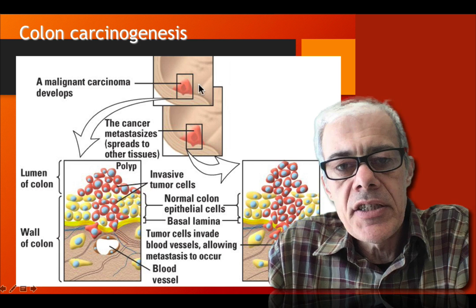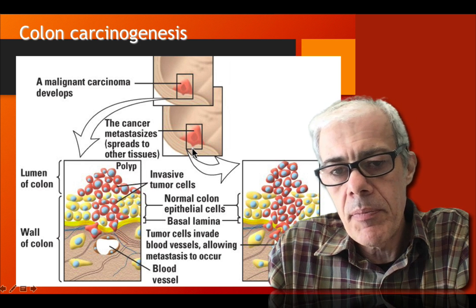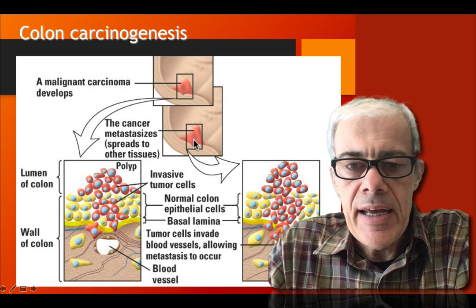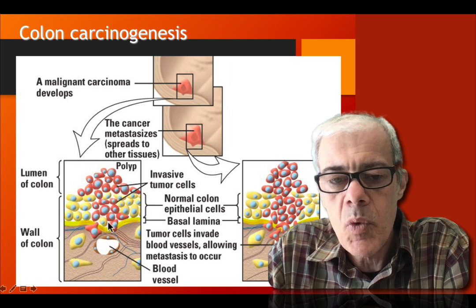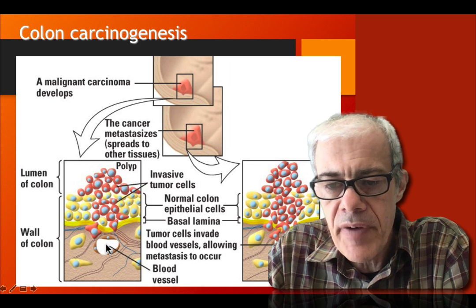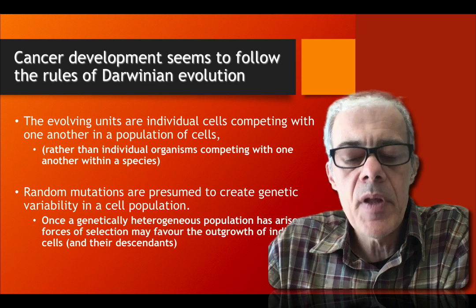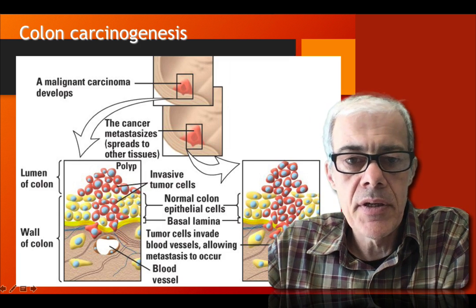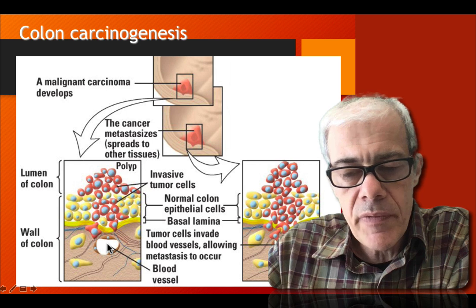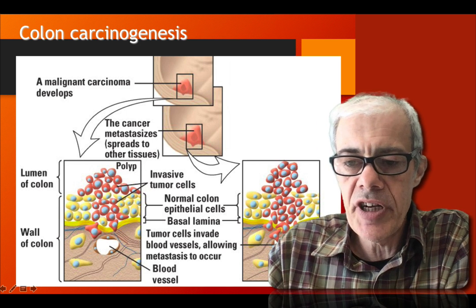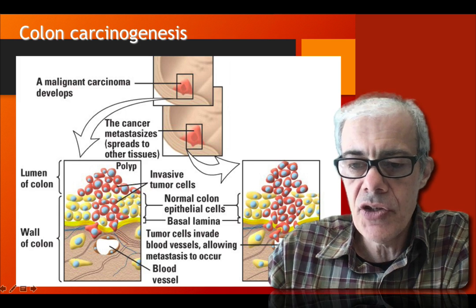At late stage cancer, the tumour starts to break through the encapsulating membrane. Buried in the surrounding tissue are blood vessels, and once cells can break free and enter the blood vessels, they can be transported to other regions of the body — a process called metastasis. So the tumour spreads by breaking through the membrane, getting into a blood vessel, and being transported to another region of the body where cells can escape and establish new growth.